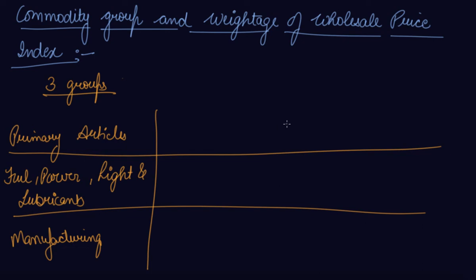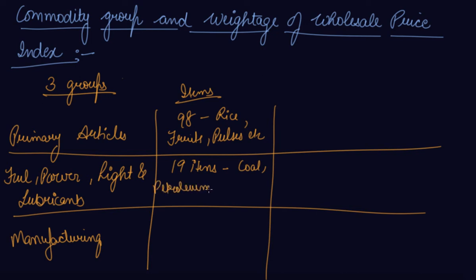In these three groups, you have 98 commodities like rice, fruits, and pulses in primary articles; 19 items including coal, petroleum products, and electricity in fuel power and lubricants; and 318 items in manufacturing, which includes textiles, sugar, paper, machinery, and chemicals.